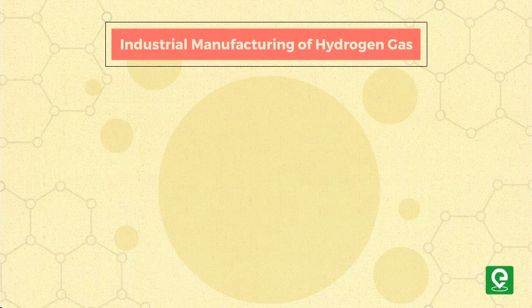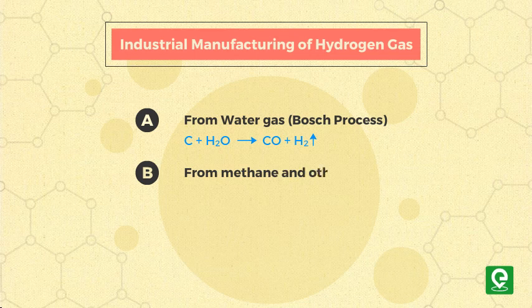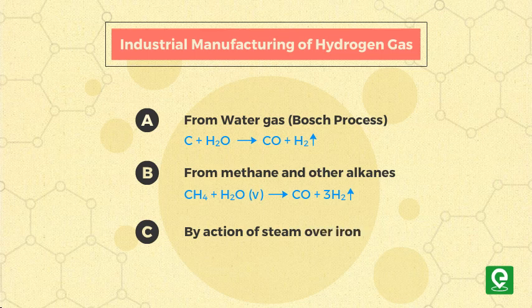Now let's learn about the industrial manufacturing of hydrogen gas. Method A: from water gas — the Bosch process. Carbon plus water with heat gives carbon monoxide, releasing hydrogen gas. Method B: from methane and other alkanes. Reaction of alkanes with water results in formation of carbon monoxide and hydrogen gas.